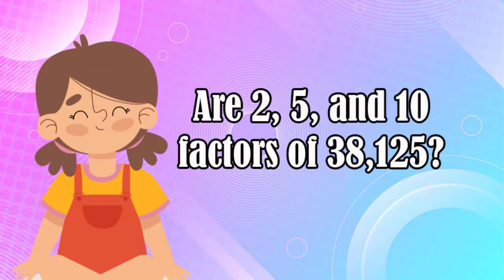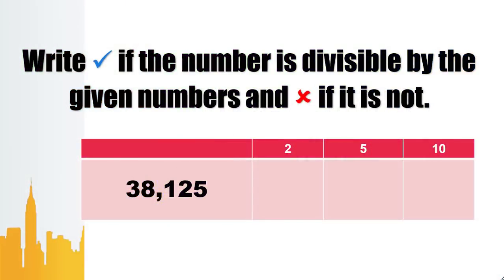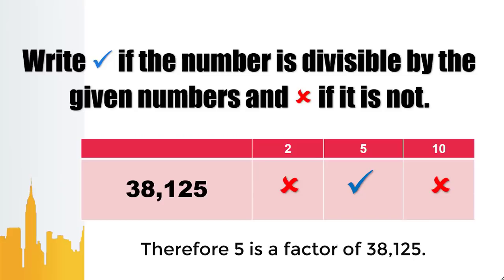Problem 4: Are 2, 5, and 10 factors of 38,125? Going to the divisibility test. Is 38,125 divisible by 2? No, since the digit on the 1's place is not even. How about 5? Yes — the digit on the 1's place is 5. How about 10? No — the digit on the 1's place is not 0. Therefore, from 2, 5, and 10, only 5 is the confirmed factor of 38,125.